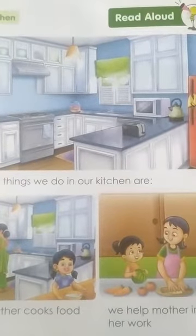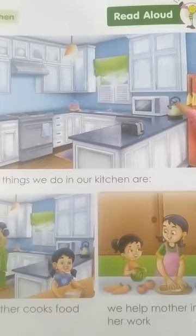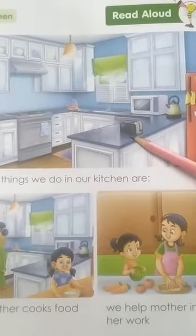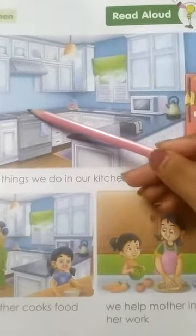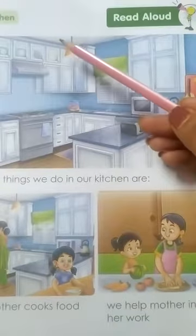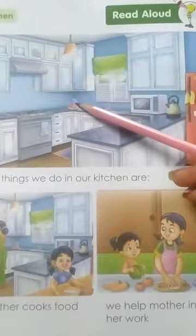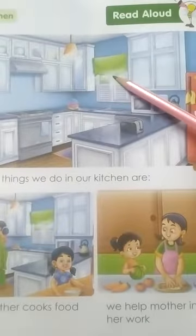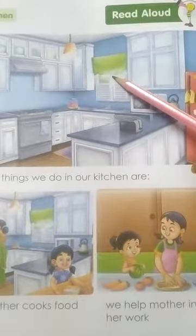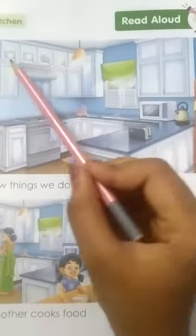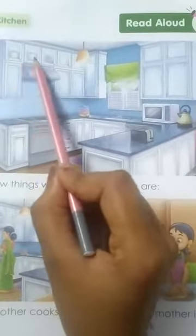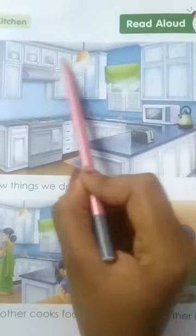Fridge. Kettle. Microwave. Toaster. Gas. Chimney. Light. Tiffin. What is this? Window. And what is this? Look. Utensils.